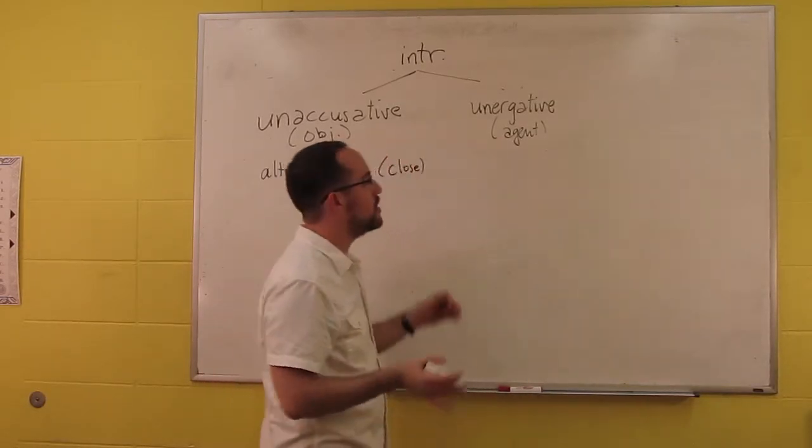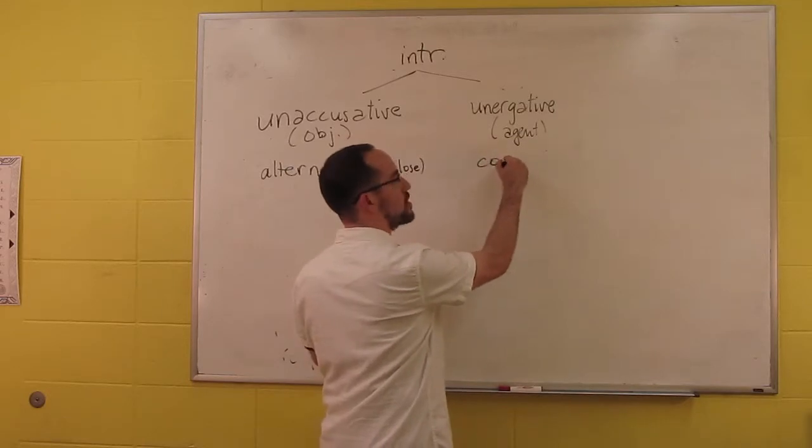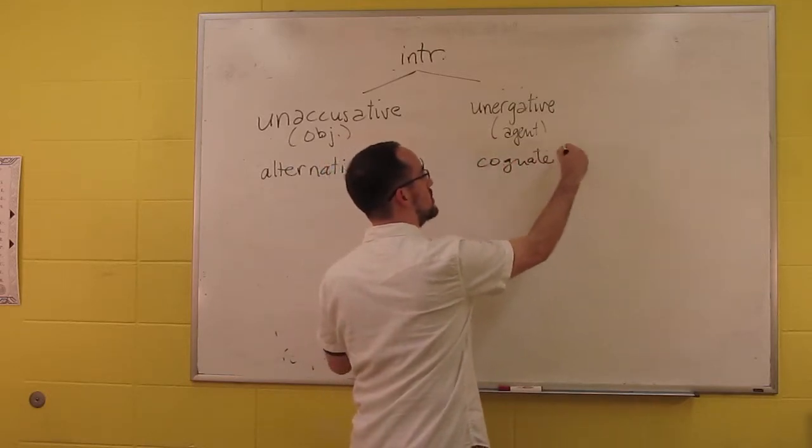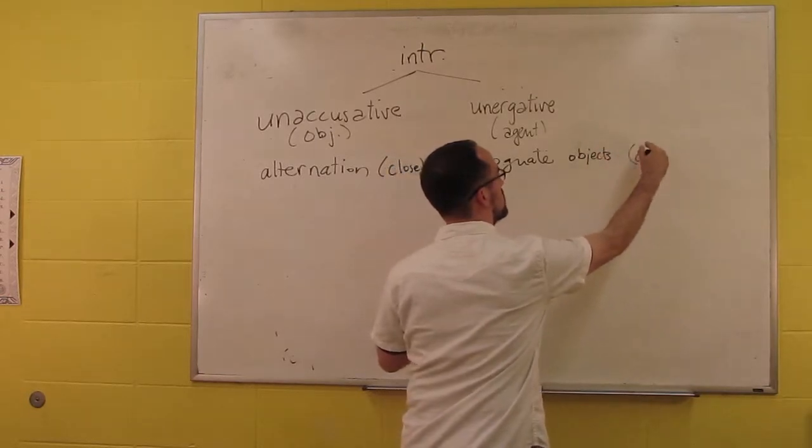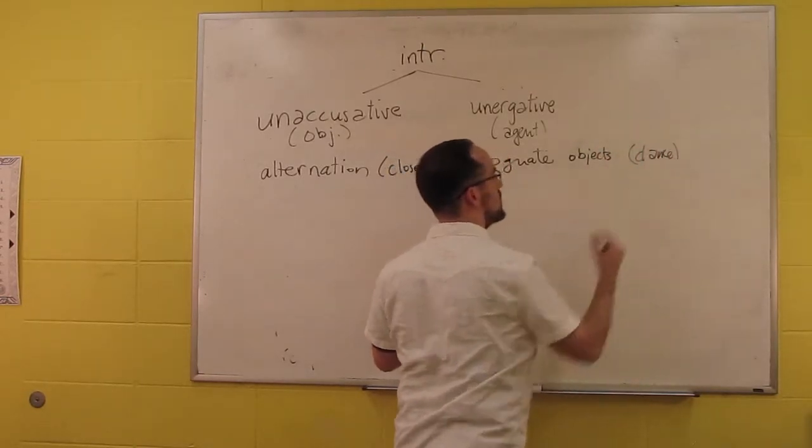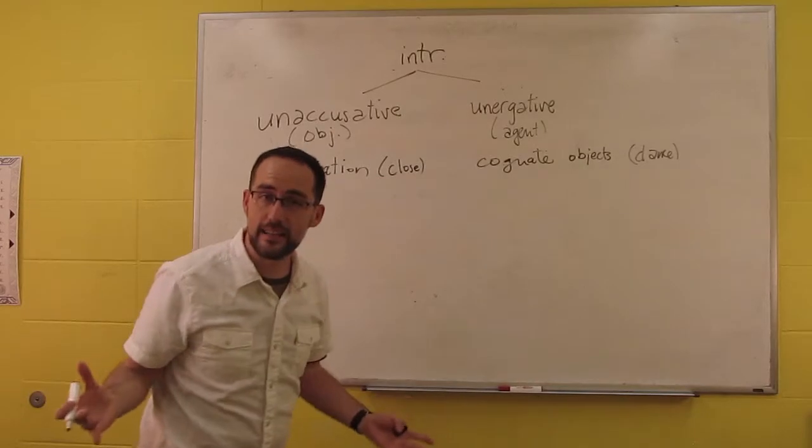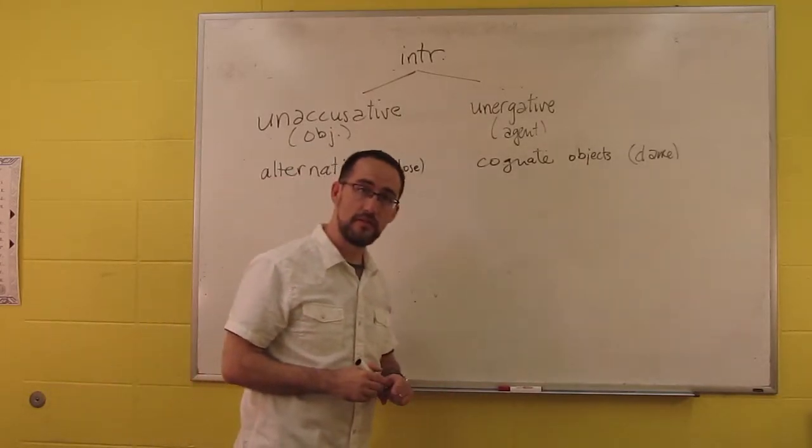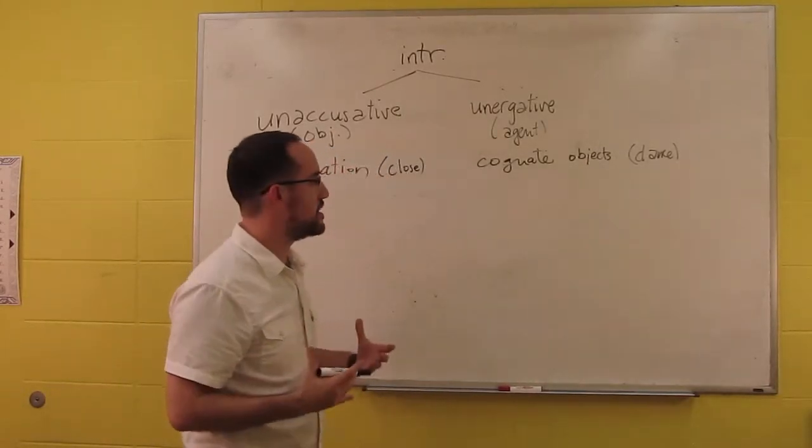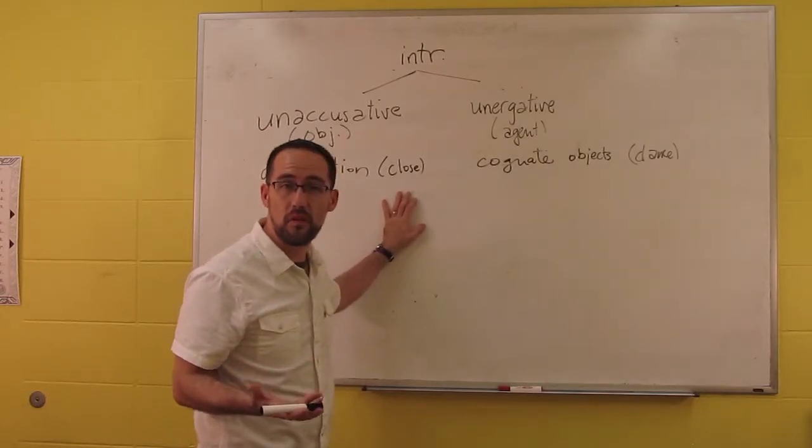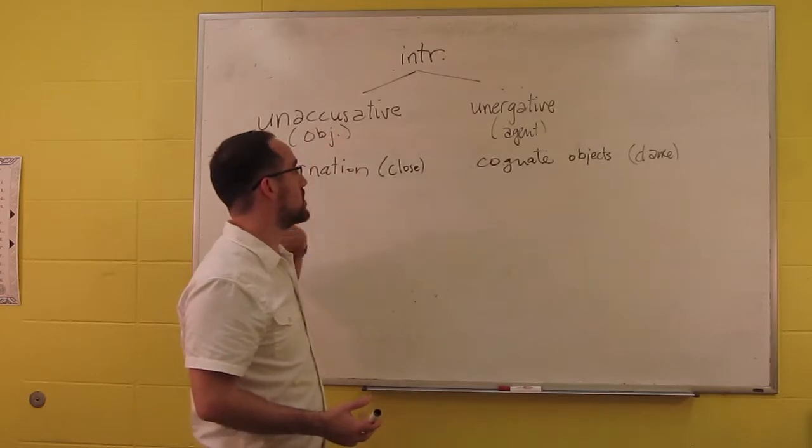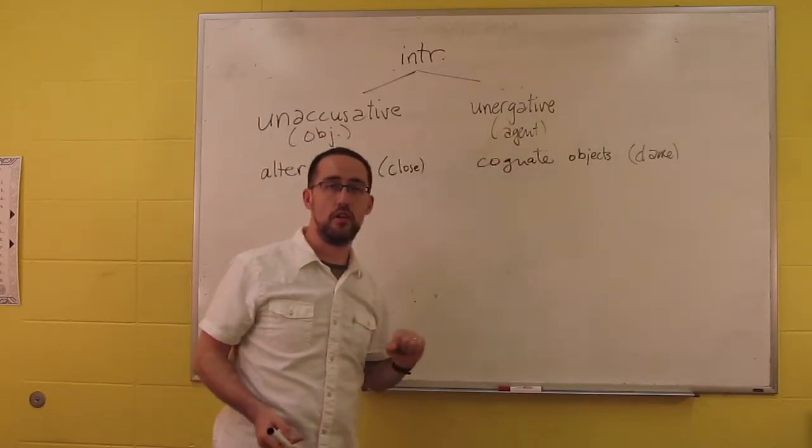Unergatives, on the other hand, do allow what are called cognate objects. A good example is dance. You can say I danced a dance. That works just fine. You can't really say I fell a fall. Fall is an unaccusative, but dance would be an unergative.